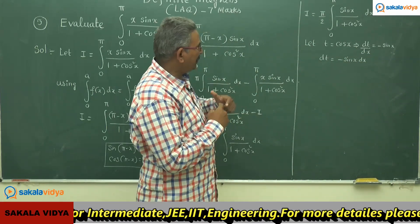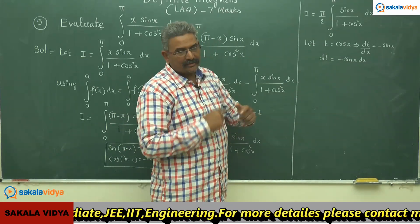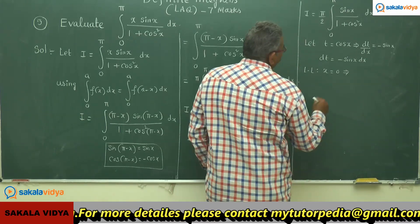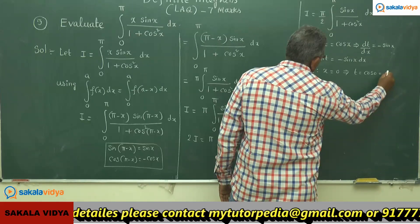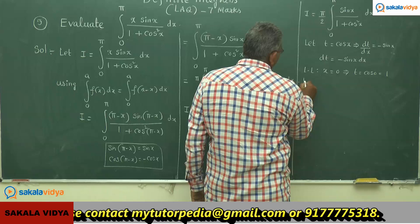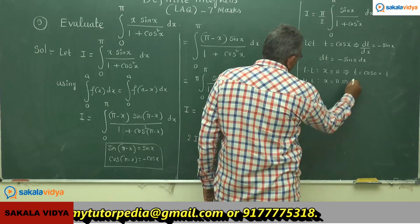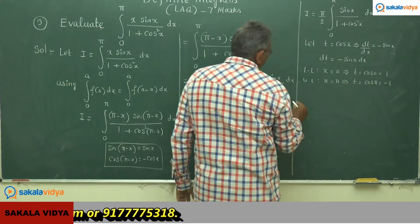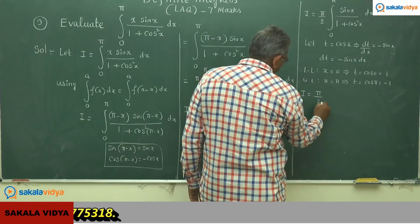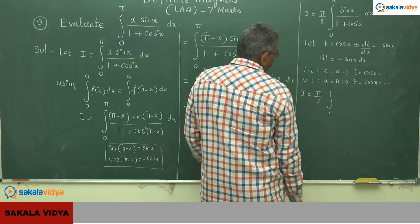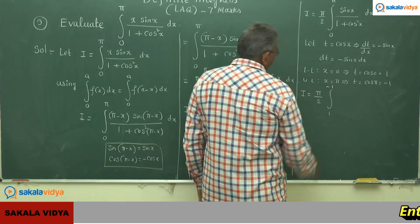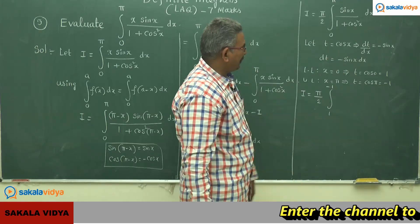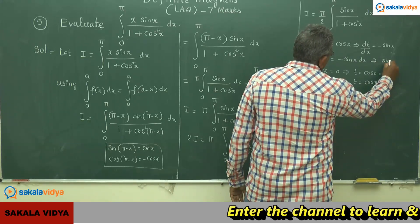Whenever substitution takes place, the limits also change in accordance with the new variable. For the lower limit x = 0, t = cos(0) = 1. For the upper limit x = π, t = cos(π) = −1. So I becomes (π/2) times the integral from 1 to −1 of 1/(1 + t²) with sin(x) dx replaced by minus dt.